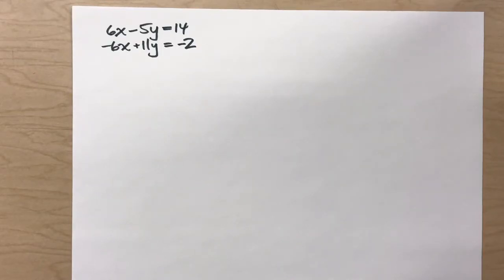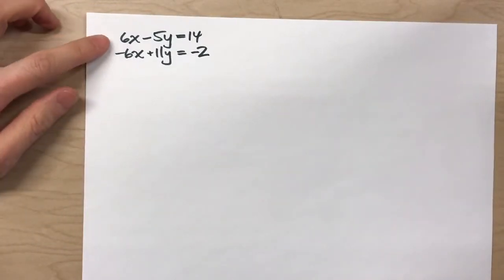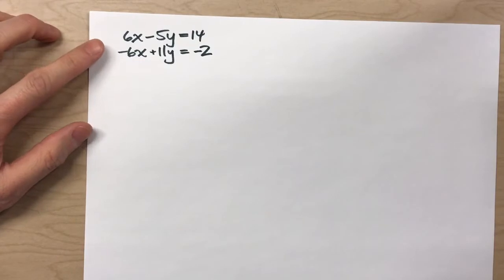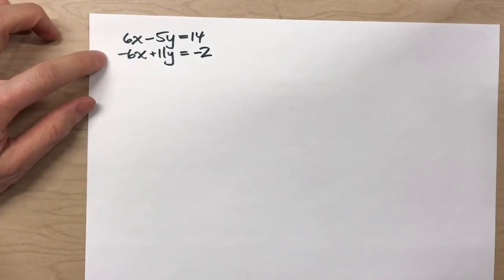Today, we're solving systems of equations again, but we have a new trick. So, we have two equations here. Neither one of them has an x equals or a y equals.